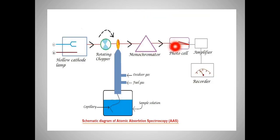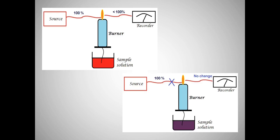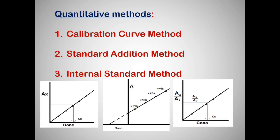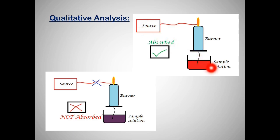The remaining components are the same as in flame emission spectroscopy. The recorder records the light intensity, and based on the change in intensity of the source radiation, we determine how much light has been absorbed — enabling quantitative analysis, done in the same manner as the flame photometer. AAS can also be used for qualitative analysis: if the source and the sample solution are the same element, light will be absorbed, confirming the identity of the sample.